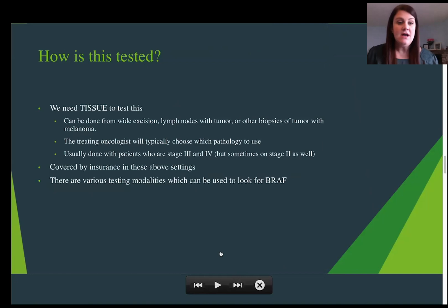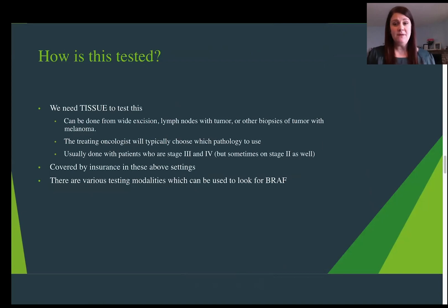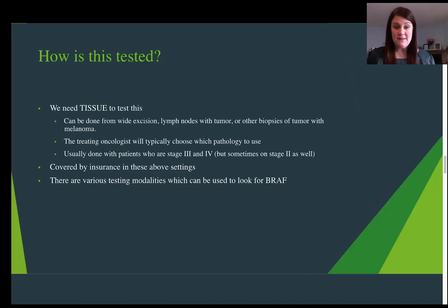So how do you test BRAF? We need tissue to do this test. The tissue can come from various sources: your primary melanoma if it's deep enough, a wide excision, lymph nodes with tumors, or biopsies of metastases like cutaneous metastases, lymph node metastases, lung, and liver. If we can get a tissue sample, a lot of times for a metastatic lesion we need a core biopsy to get enough tissue. There are various testing methods that can be done, and your oncologist will typically choose the testing method they want to employ.